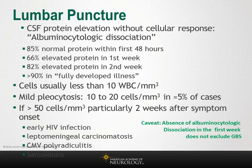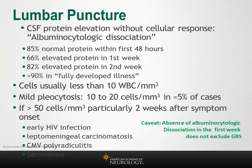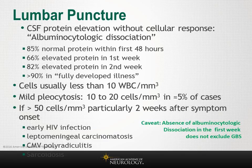Cerebrospinal fluid protein elevation without pleocytosis — the typical albuminocytologic dissociation — is the hallmark of Guillain-Barré syndrome. However, when performed in the first 48 hours, 85 percent of patients may have normal protein. About two-thirds have elevated protein in the first week, and more than 90 percent have this pattern in fully developed illness. Pleocytosis is unusual; if more than 50 cells per cubic millimeter are found, differential diagnoses include early HIV infection, Lyme disease, leptomeningeal carcinomatosis, CMV polyradiculitis, and sarcoidosis.